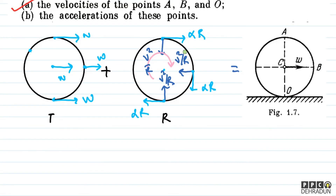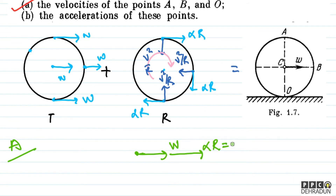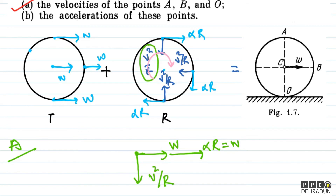Now in Part B, we find accelerations of these points. For point A, due to translation there is acceleration W in the forward direction. Due to rotation, tangential acceleration is alpha into R, which equals W because of pure rolling. Additionally, towards the center — which is the downward direction in this diagram — there is centripetal acceleration v square upon R, where v is the speed due to rotational motion only.